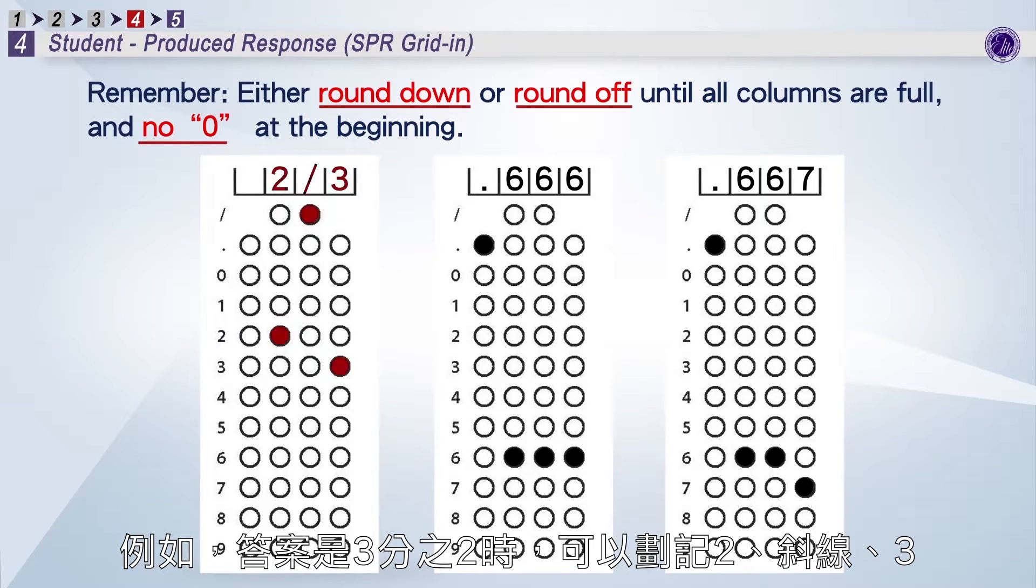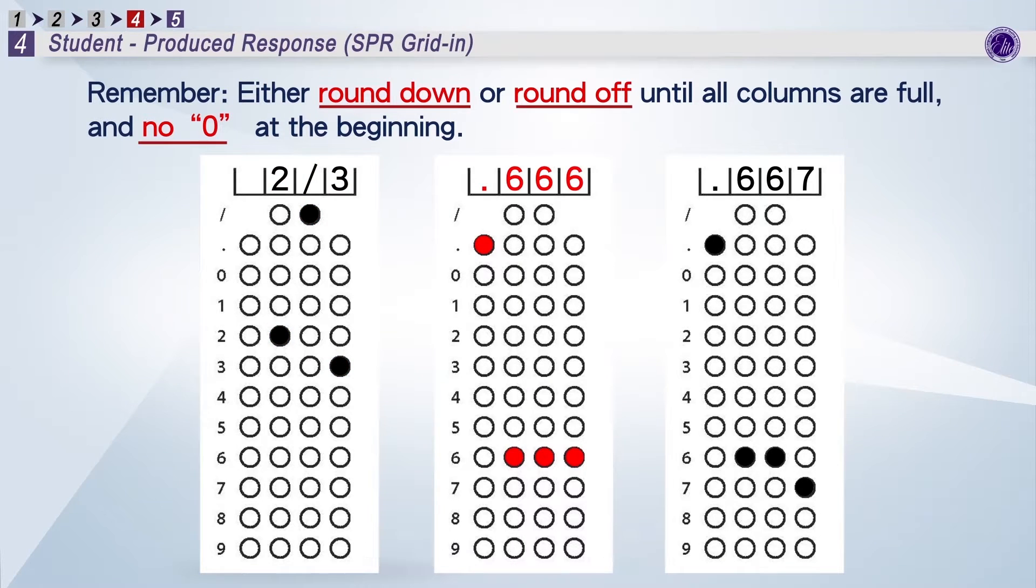if the answer is two-third, you can mark 2 slash 3, 0.666, 0.667,